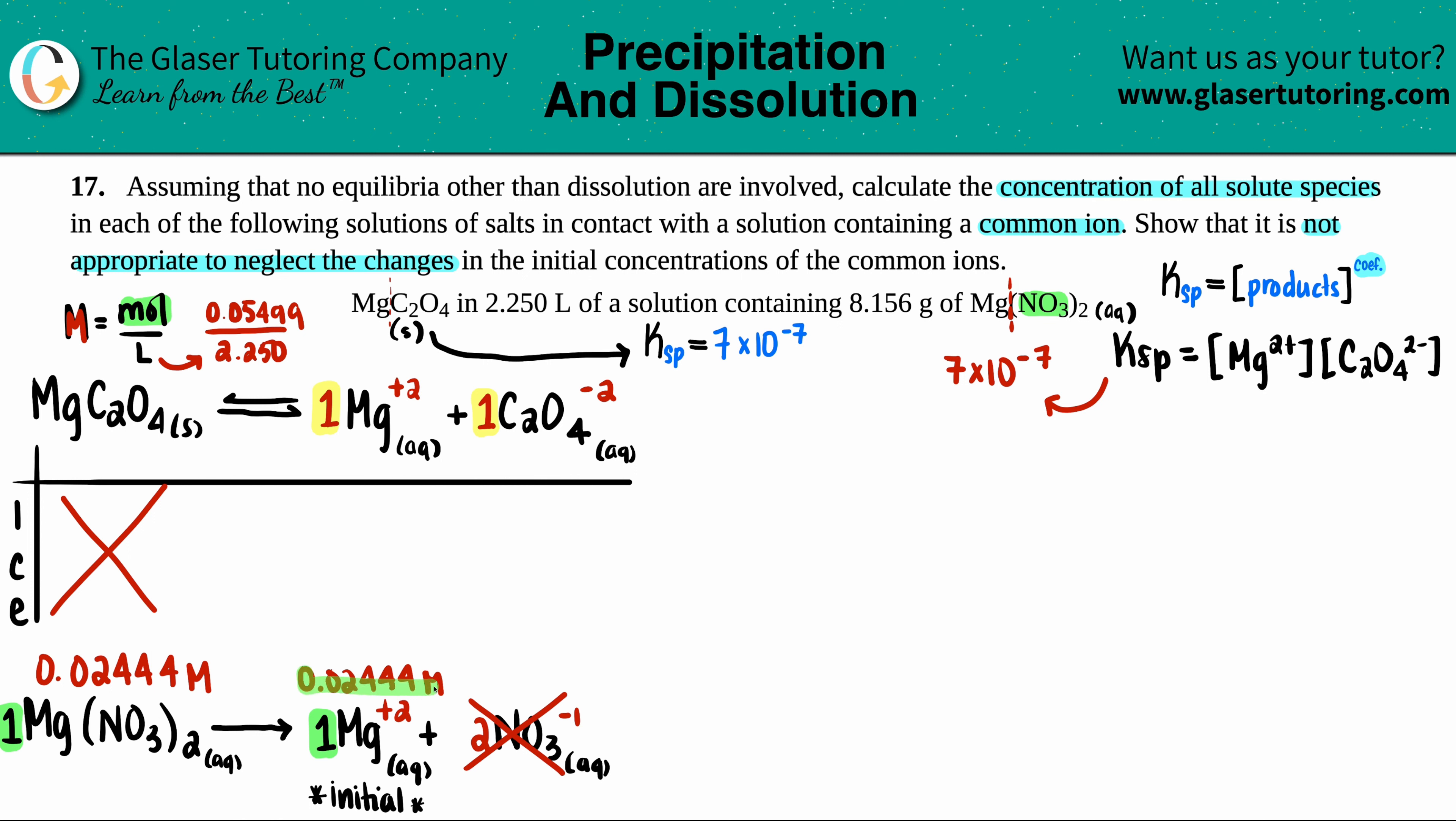And whenever you say the word initial, we have to write an ice table. So let's just write it out. We have I C E. Remember, solids don't get included in your KSP. So for case and purposes here, I'm just going to not care about this section. And initially, we started with 0.02444 molarity. So that's the number that goes here. We didn't start off with any oxalate, so that's 0. And then remember, your change is the plus x. So you can only go up from there. So that would be plus x. There's only one of them. So plus 1x. And then the same thing here, plus x. Combine the initial and the change.